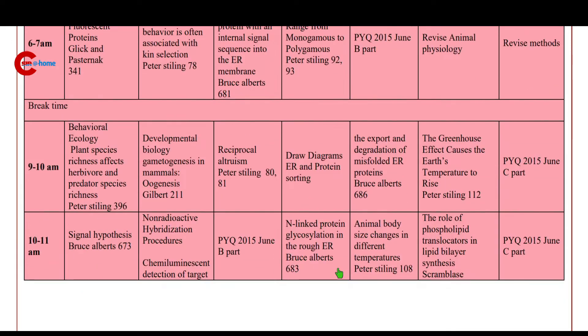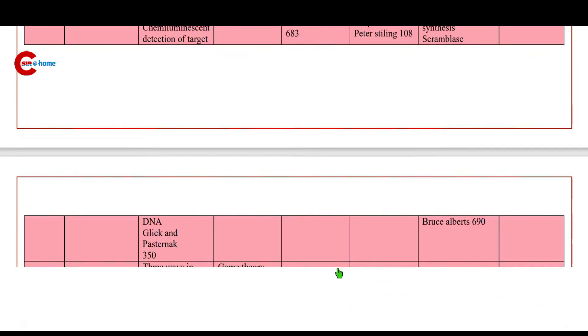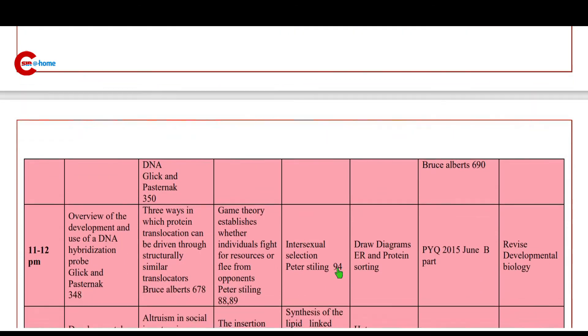10 to 11 a.m.: N-linked protein glycosylation in the rough endoplasmic reticulum. Then 11 to 12 p.m.: intersexual selection from Peter Stilling.